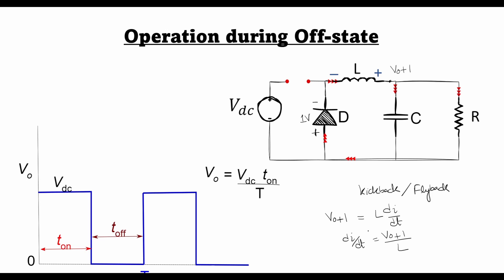This gives me the slope of the current through the inductor during the T off state. Now I can plot a decaying curve like this where the slope of this current is given by V0 plus 1 divided by L, and this is the current I0.